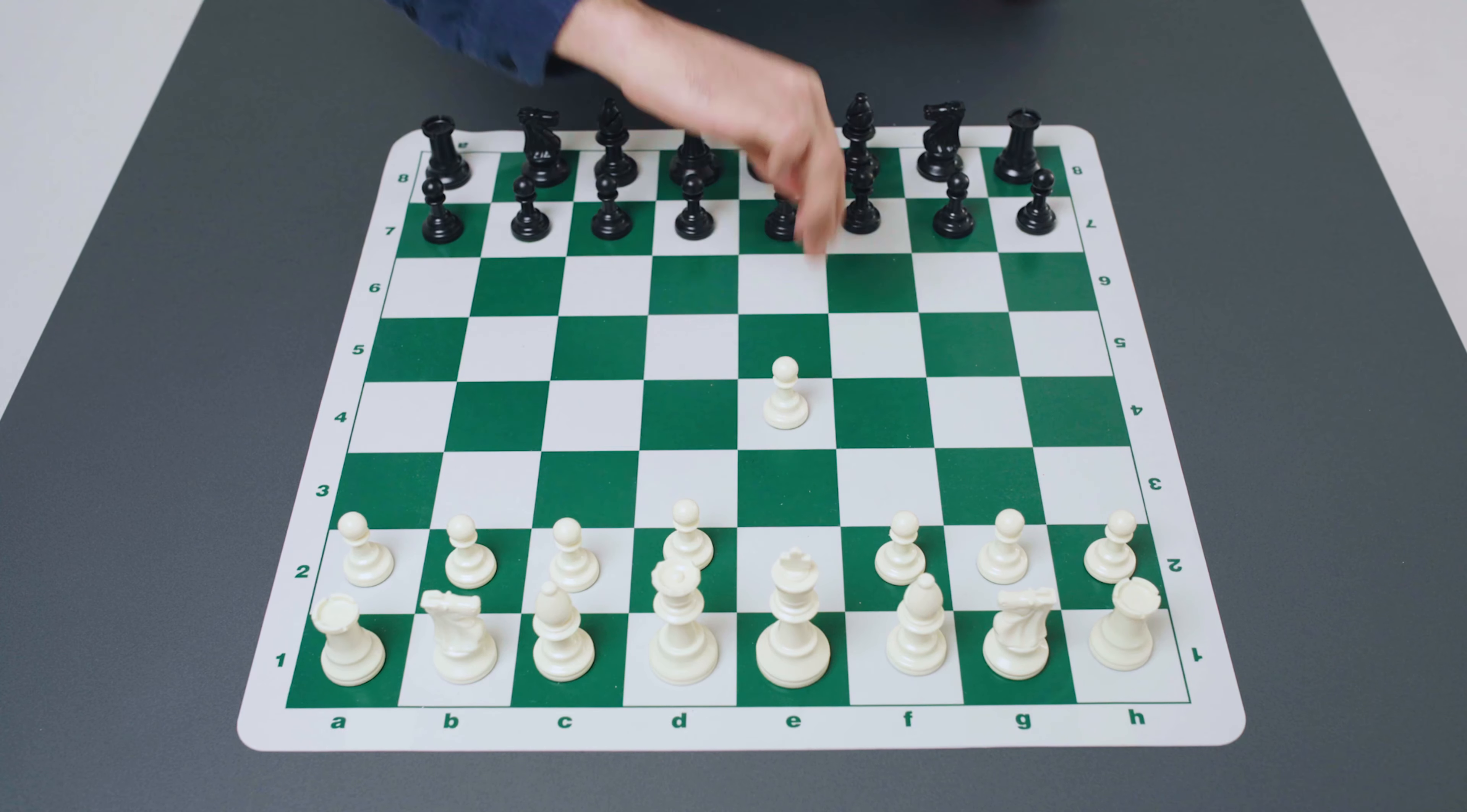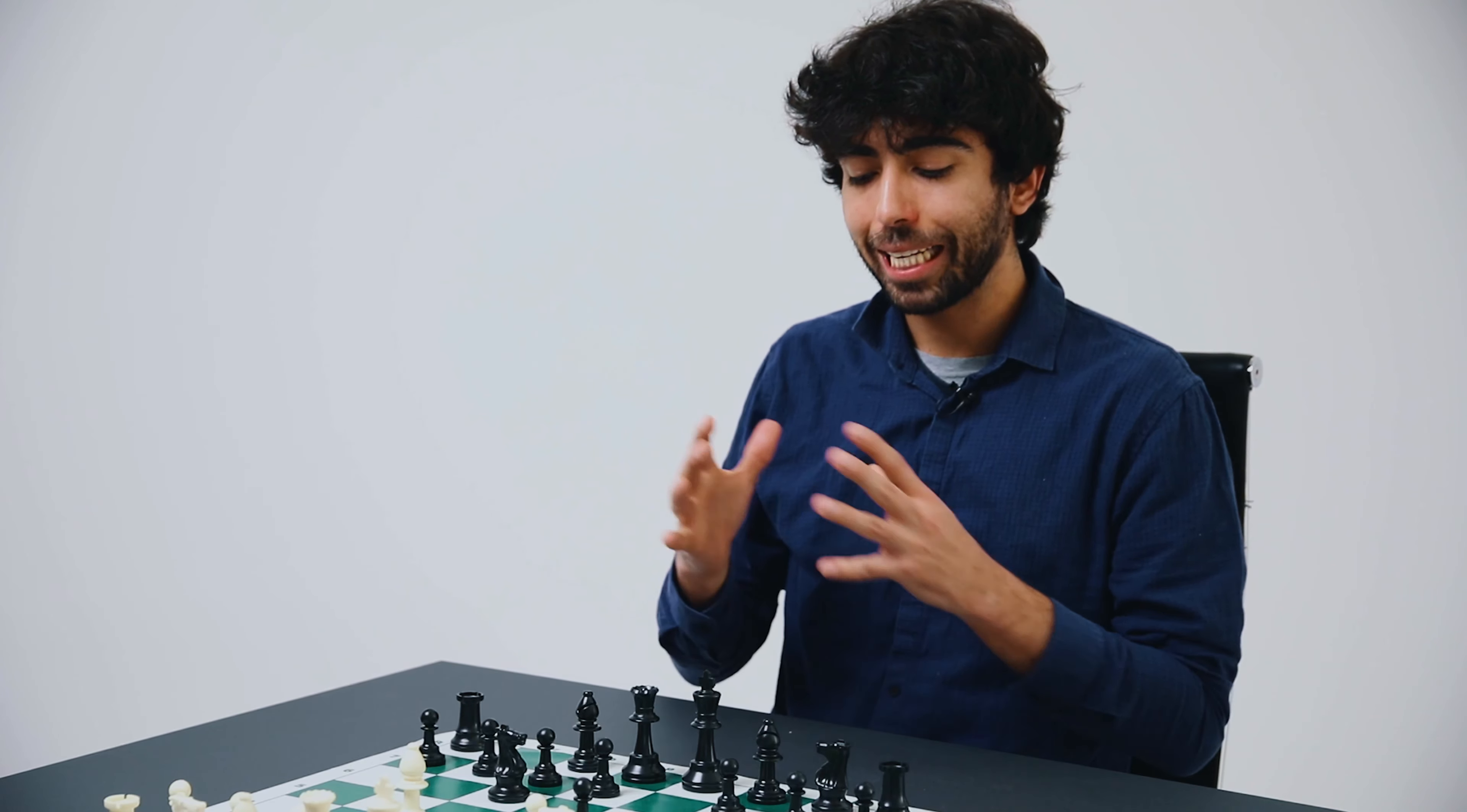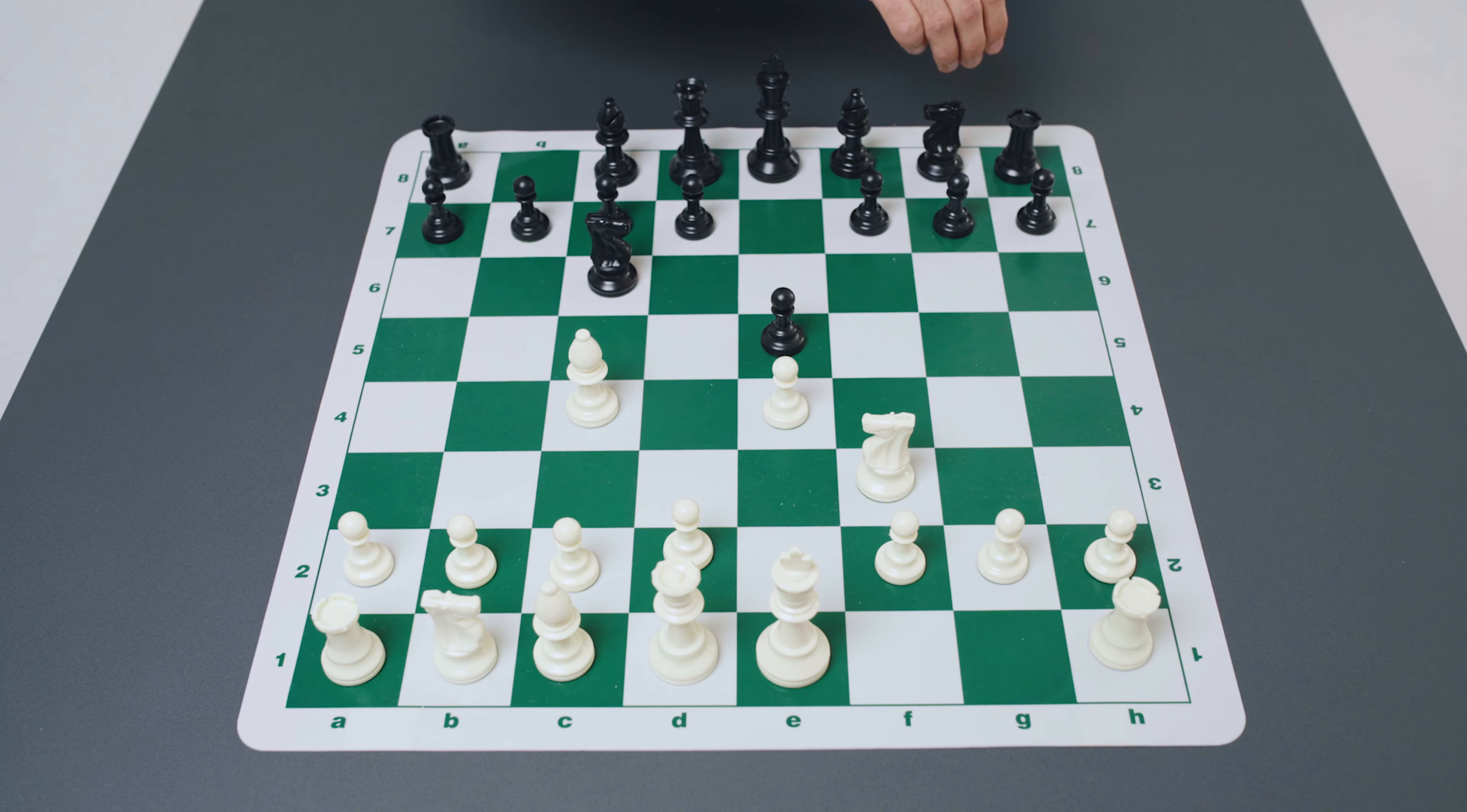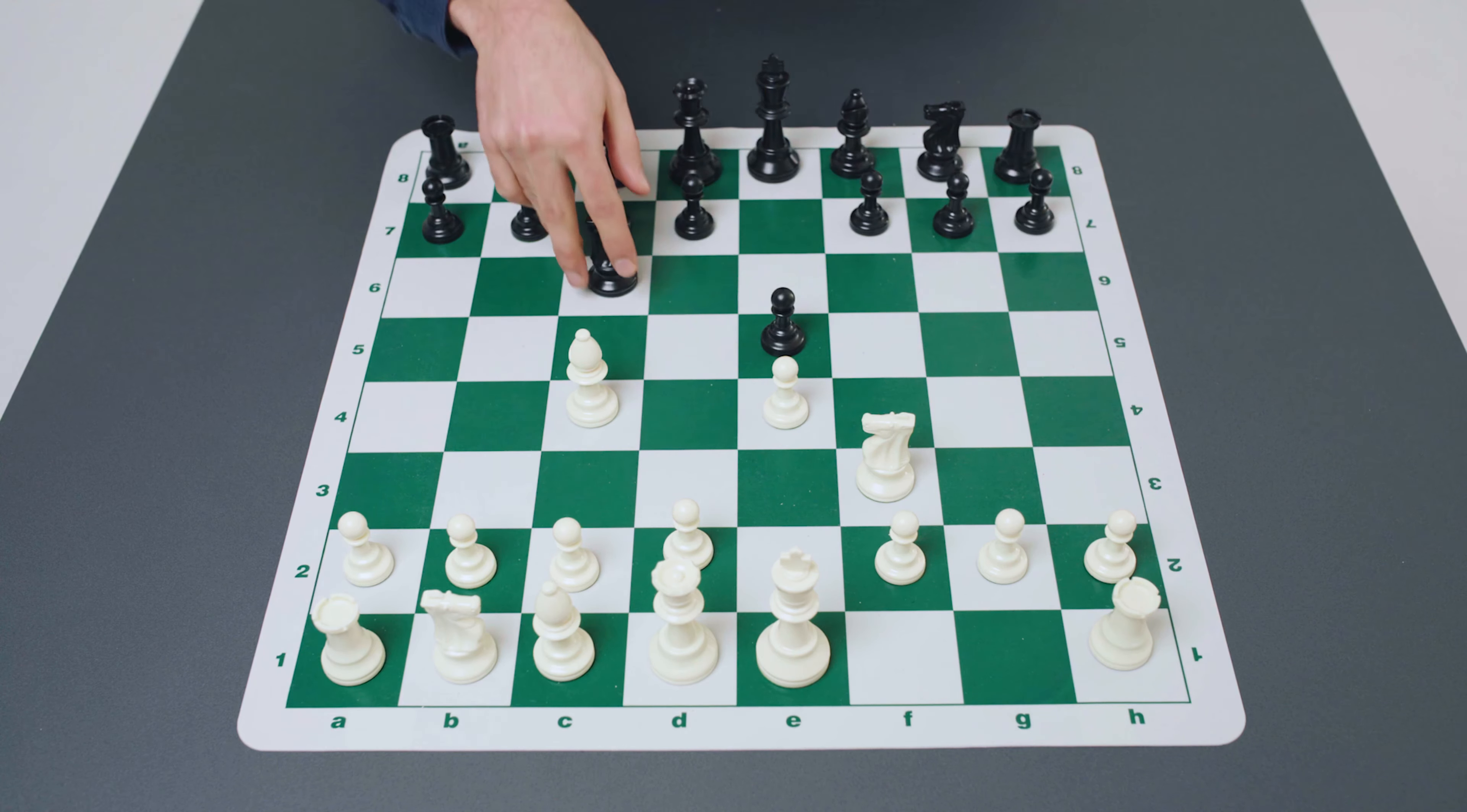But in our series, we're going to examine it from the move order of the two knights defense. So let's go back, we saw this was the position here. e4, e5, knight f3, knight c6, bishop to c4, Italian game, knight f6, two knights defense, pawn to d4, open game and now after e takes d4, we are in the Scotch Gambit lines.